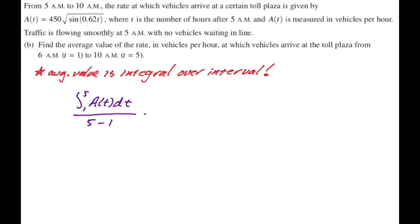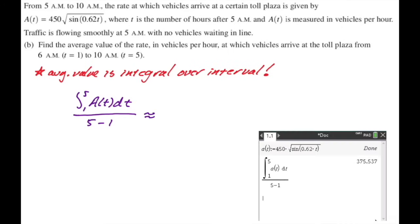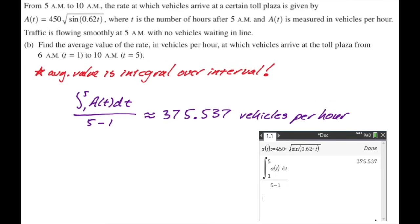This is a calculator question, so we're going to store A of T and do the integral over the interval. I got 375.537. The units for the average value of a function are the same as the units of the function. A of T is measured in vehicles per hour, so the average value of A of T is also vehicles per hour, which confirms we've set it up correctly.